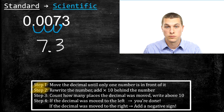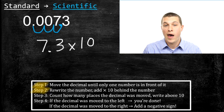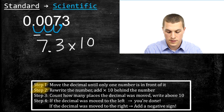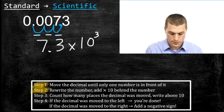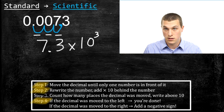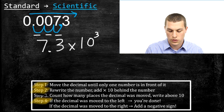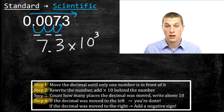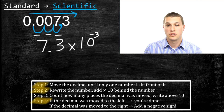We want to count how many times we've moved that decimal — turns out once, twice, three times — so we write a three in the exponent. Last step, step four: if the decimal was moved to the left, you're done. If the decimal was moved to the right, we need to add a negative sign. In this case, we've actually moved our decimal to the right, so we add a negative sign in front of the exponent. Remember, that negative sign is really important — whenever you see it, that means your number is really small.